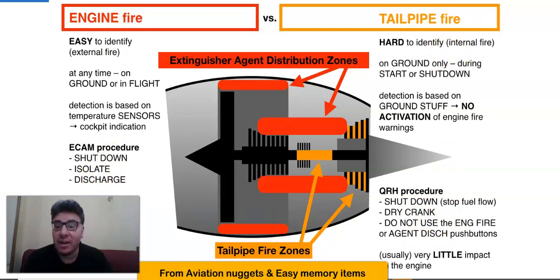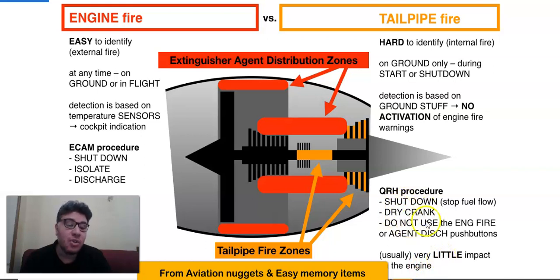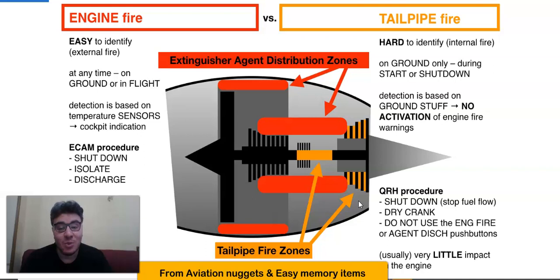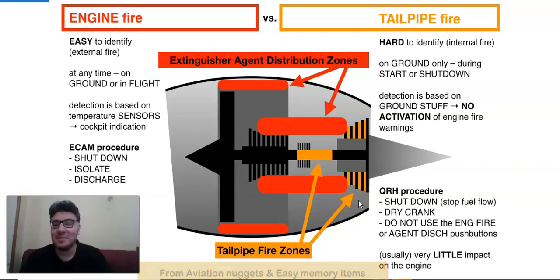Engine fire can cause a significant impact on the engine, whereas tailpipe fire usually has very little impact — especially if you perform the dry cranking or dry motoring procedure as quickly as possible. Thank you for listening. Always fly safely and maintain your aircraft safely. Stay tuned for upcoming sessions. I am very happy to cooperate with Easy Memory Item to make abnormal procedures as easy as possible. Thank you, and goodbye.